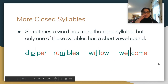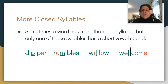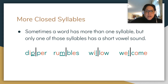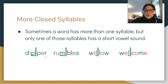Sometimes a word has more than one syllable, but only one of those syllables has a short vowel sound. This word has two syllables. In the first syllable, the P is underlined because it acts as a closed syllable — it closes this vowel to give it the 'ih' sound: 'dip.' The R is not underlined here because E and R work together to say 'er.' So this syllable says 'pur' — giving us 'dipper.'